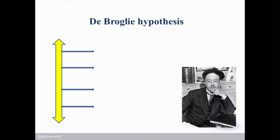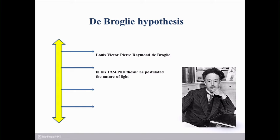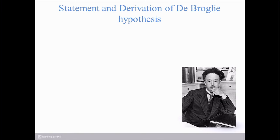Now, consider this scientist. At the extremely right-hand side, you can observe the photo of one scientist. The name of that scientist is Louis Victor de Broglie. In the year 1924, in his PhD thesis, he postulated the nature of light. Due to his assumption, he got the Nobel Prize in 1929 for physics, for the study of the de Broglie hypothesis.